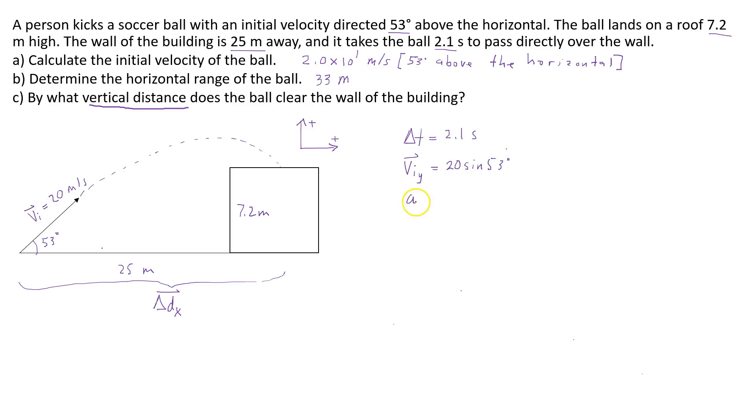The acceleration of the ball is negative 9.8 meters per second squared. This should be meters per second. And what I'm trying to find is the vertical displacement of the ball.